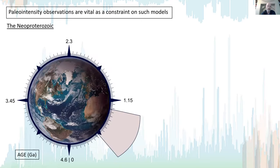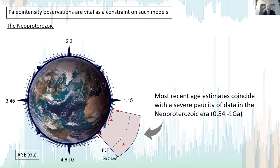If we look at the Neoproterozoic in more detail, this cartoon represents geological history from 4.6 billion years ago clockwise to the present day, with the Neoproterozoic highlighted. Populating this with all current paleointensity data, we see just four single data points in almost 500 million years of Earth history. The takeaway message is that the most recent age estimates coincide with a severe paucity of data in the Neoproterozoic.